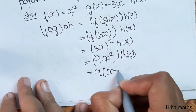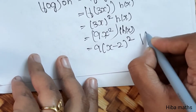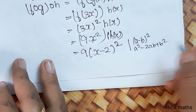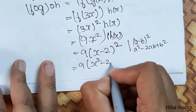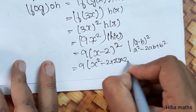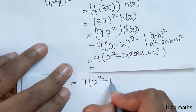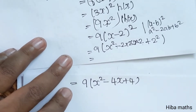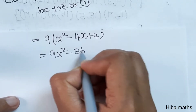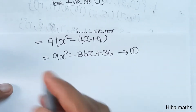9 into x minus 2 whole square. x minus 2 whole square is a minus b whole square, which is a square minus 2ab plus b square. So, 9 into x square minus 2 into x into 2 plus 2 square. That gives 9x square minus 36x plus 36. This is the first result.